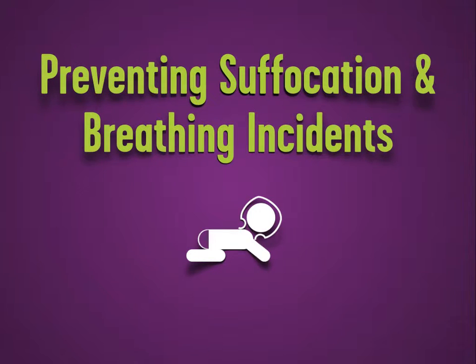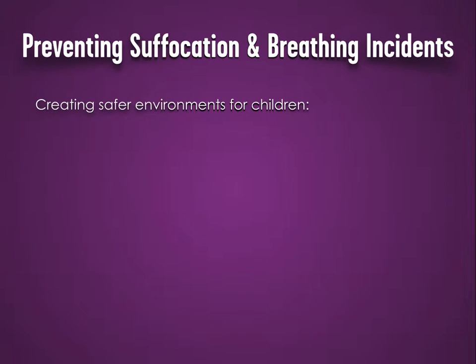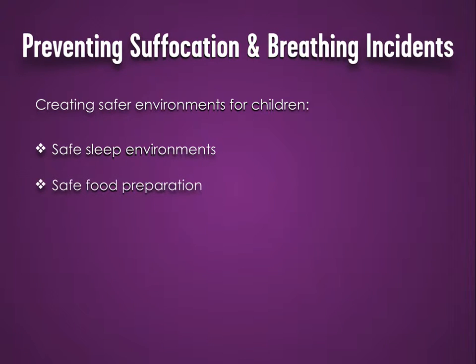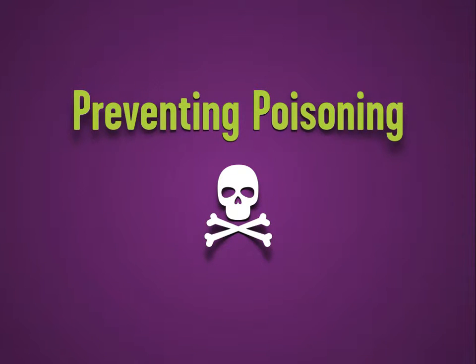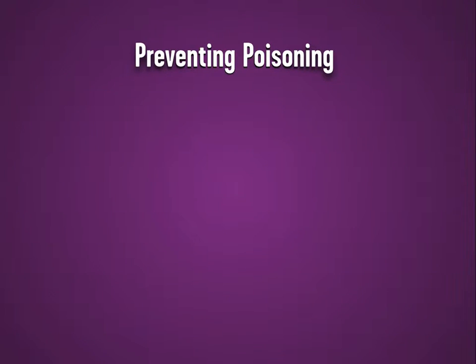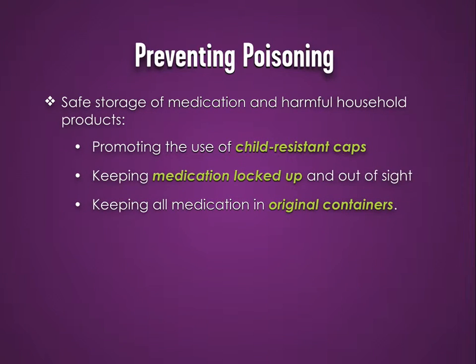Preventing suffocation and breathing incidents. Prevention strategies should focus on creating safer environments for children: safe sleep environments, safe food preparation, choking hazards kept out of reach, and removing all hanging window cords, coverings, or drawstrings. Preventing poisoning. In children, poison prevention should focus on the safe storage of medication and harmful household products. Promote the use of child-resistant caps, keep medication locked up and out of sight, and keep all medication in original containers. Active supervision at all times should be encouraged.